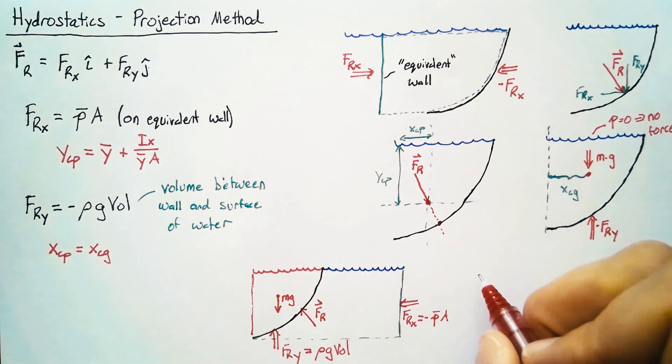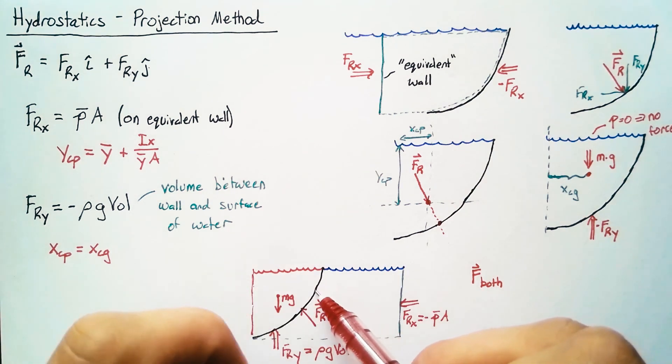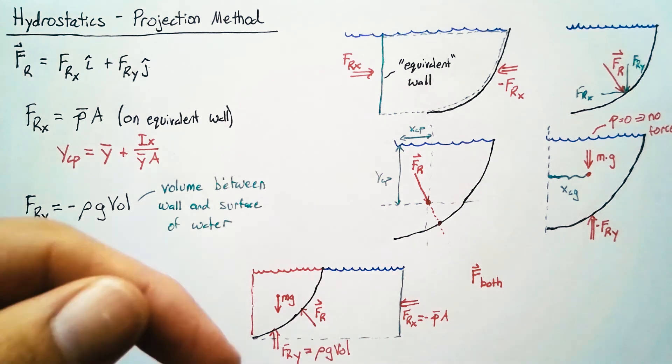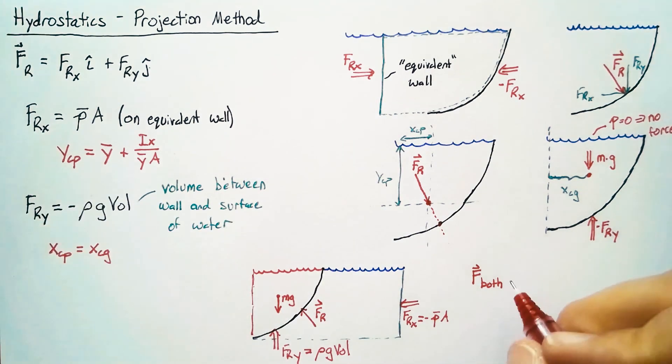Now another way of thinking about this: if we filled up the water on both sides, the force from that water would be equal to zero because the pressure at every single point would be the same on both and so they just cancel each other out. So the force if we have water on both sides is equal to zero.